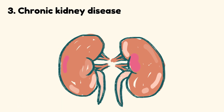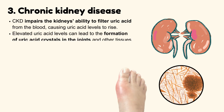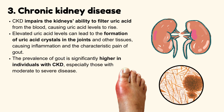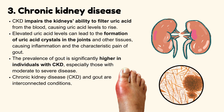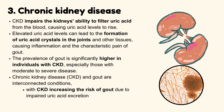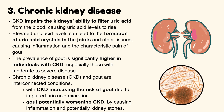Chronic kidney disease: Chronic kidney disease impairs the kidney's ability to filter uric acid from the blood, causing uric acid levels to rise. Elevated uric acid levels can lead to the formation of uric acid crystals in the joints and other tissues, causing inflammation and the characteristic pain of gout. The prevalence of gout is significantly higher in individuals with CKD, especially those with moderate to severe disease. CKD and gout are interconnected, with CKD increasing the risk of gout and gout potentially worsening CKD by causing inflammation and kidney stones.